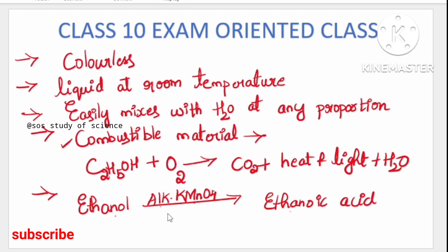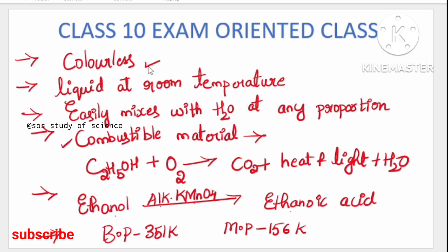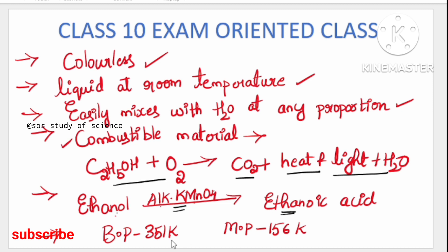Apart from these, you also need to know the boiling point and melting point of ethanol. The boiling point of ethanol is 351 Kelvin and the melting point is 156 Kelvin. So to summarize: ethanol is colorless, liquid at room temperature, mixes with water at any proportion, is combustible, converts to ethanoic acid with an oxidizing agent, and has a boiling point of 351 K and melting point of 156 K.